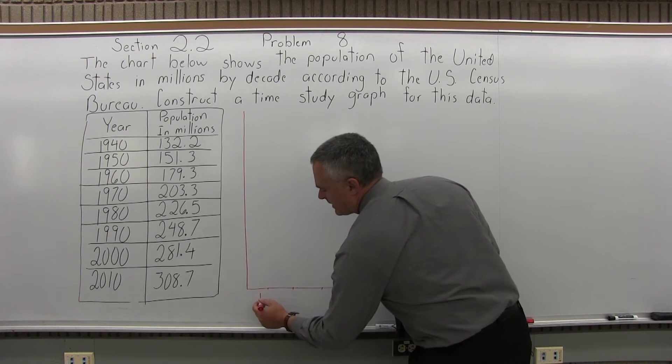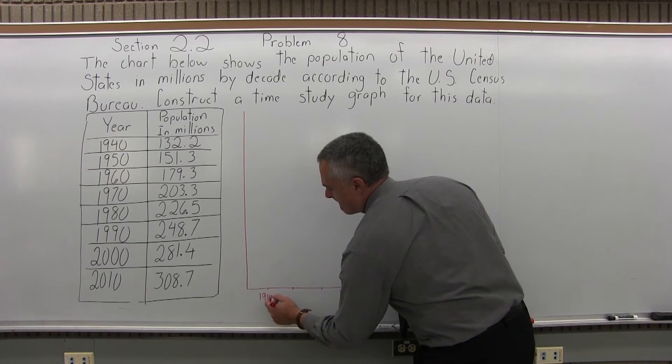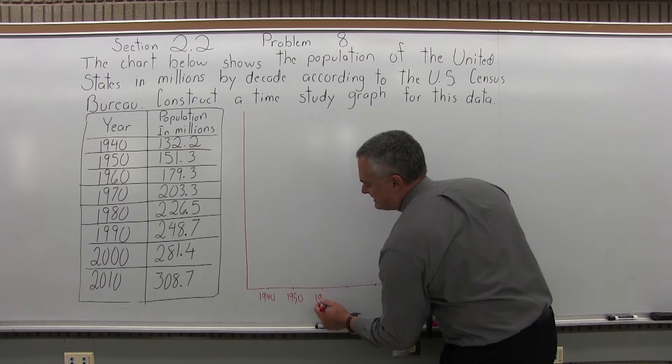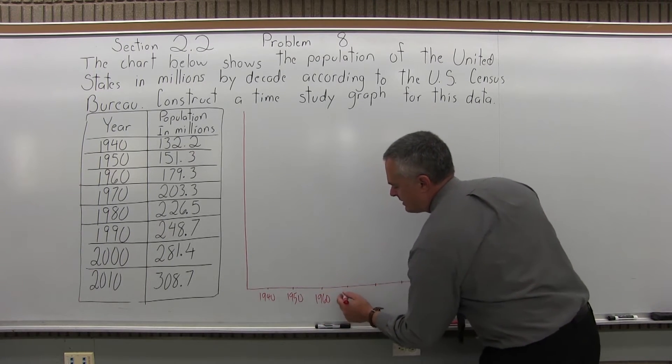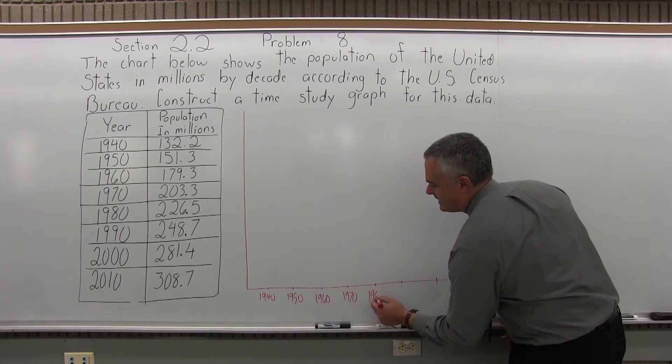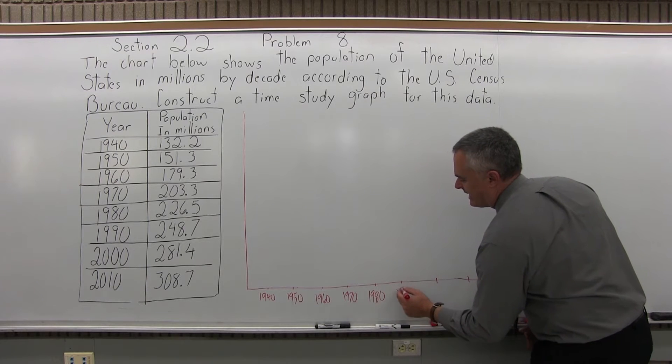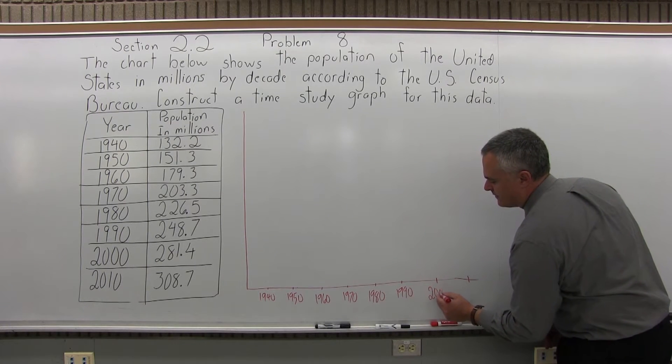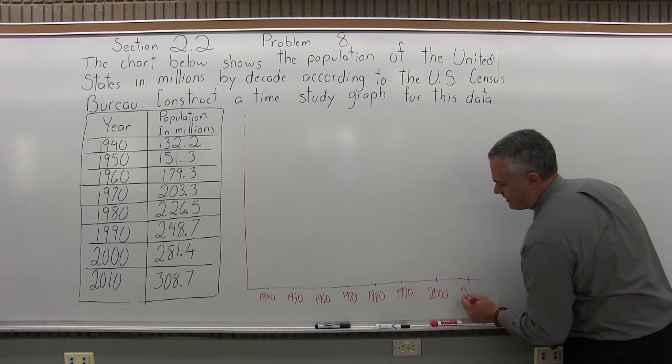So the first one is 1940. Then 1950, 1960, 1970, 1980, 1990, 2000 and 2010.